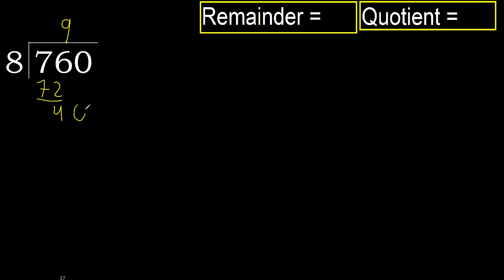Next, bring down the 0 to get 40. 8 multiplied by 5 is 40, which is not greater. Subtract: 40 minus 40 is 0. There is no next number, therefore we finish.